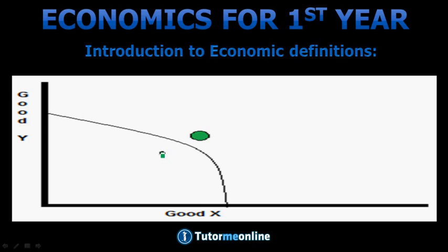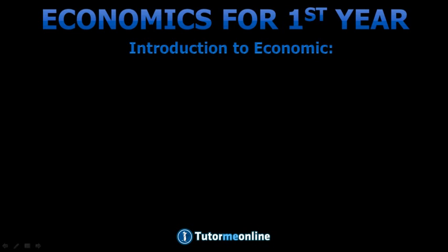The following graph will illustrate the opportunity cost. This graph illustrates scarce resources that are used to produce either good X or good Y. It illustrates opportunity cost in the fact that if chosen to produce more of one, we forfeit some of the other. All the points within the graph are achievable but inefficient. All the points on the graph are efficient and achievable. All the points outside the graph are unachievable.